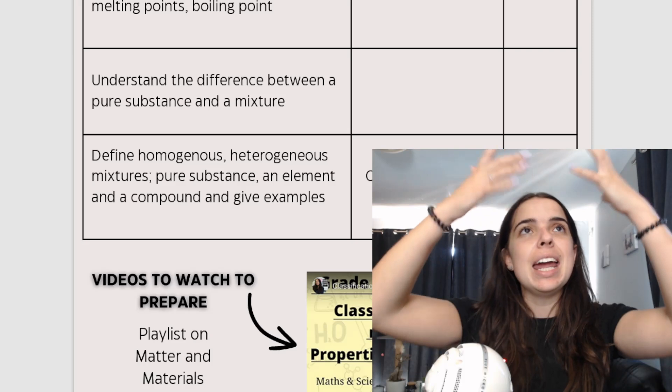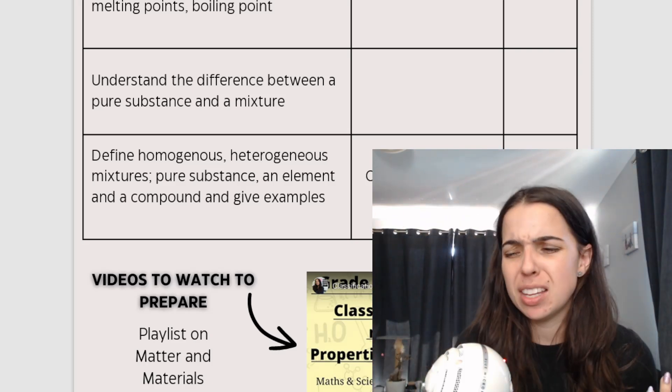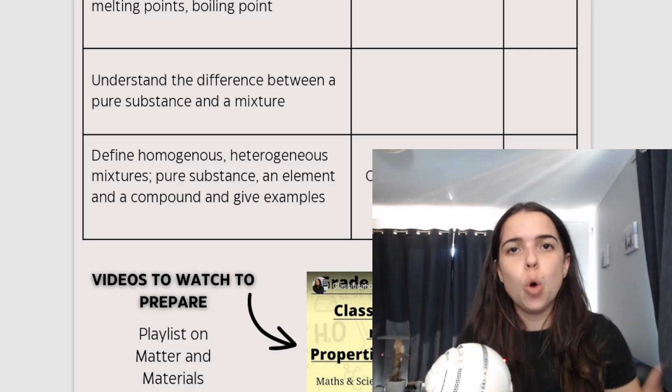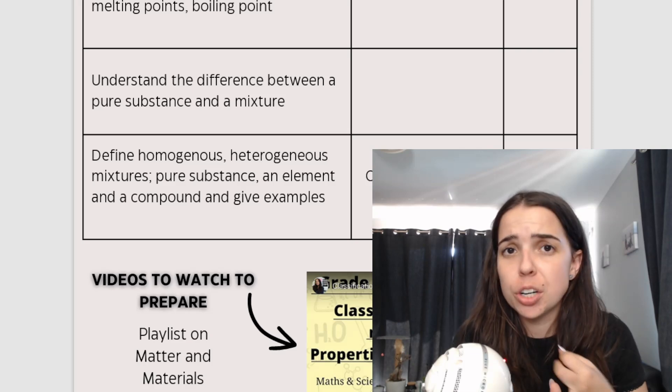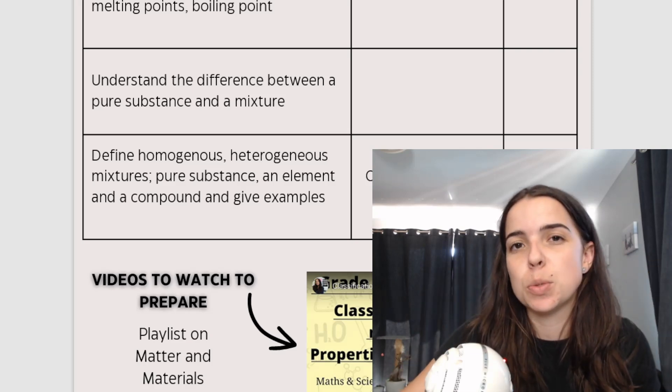So for example, air, the air around you is actually a mixture. You might think, ma'am, how's it a mixture? It's a mixture of all the different gases. You should know that in air we have oxygen, we have nitrogen, we have hydrogen, we have CO2, and a lot of smaller gases as well.